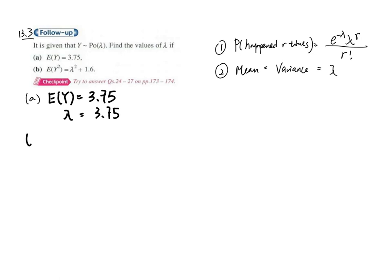For part b, given that the expected value of Y squared would be equals to lambda squared plus 1.6, you should be very careful because you need to read the variance formula. So we will use the variance one.